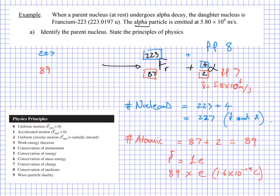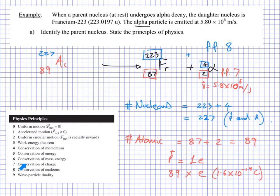Using our periodic table to look up atomic number 89, we find it's actinium. So the parent nucleus is Actinium-227. We've answered part A by applying Physics Principle 8 — conservation of nucleons — and Physics Principle 7 — conservation of charge. We notice the velocity given suggests part B will involve momentum, treating this decay like an explosion.